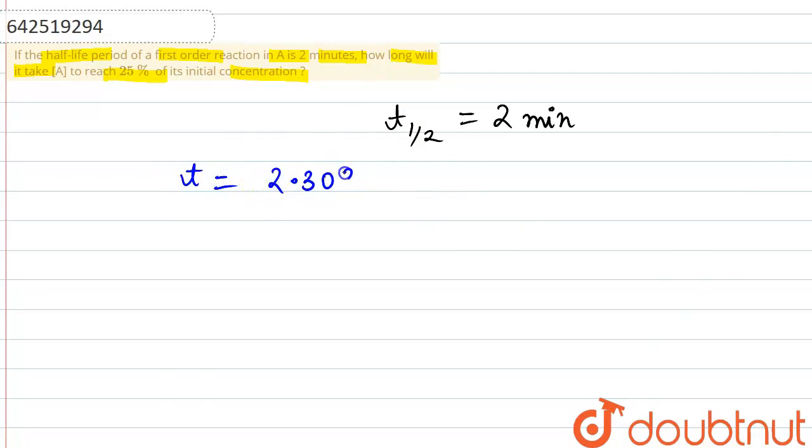So we can use the expression of time, that is equal to 2.303 divided by K into log of A divided by A-X. Now we need to understand a few things here. K is clearly the rate constant. A is the initial amount, and A-X is basically the remaining or left-over amount.